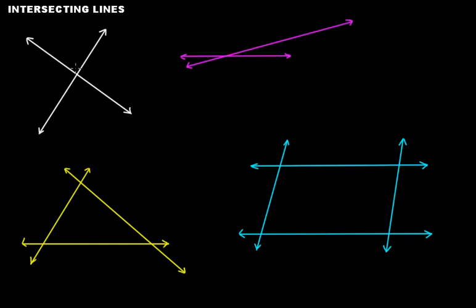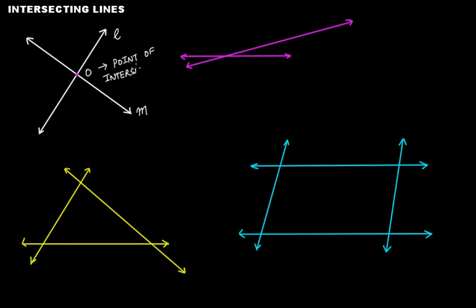We have some figures here: 1, 2, 3, and 4. In this figure, we have line L and line M. These two lines cross each other at one common point — let's call it point O. This point where the two lines cross each other is called the point of intersection.